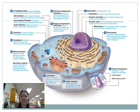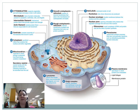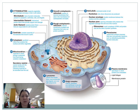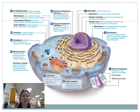This is an animal cell. The other picture was a plant cell. Here you can see the centrioles, peroxisomes — which we'll talk a little bit about — and the lysosome, which is number seven. Centriole is number twelve. And there's no cell wall here.